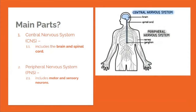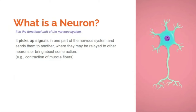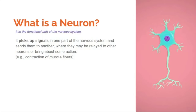The main parts are the central nervous system and the peripheral nervous system. The central nervous system includes the brain and spinal cord. The peripheral nervous system includes motor and sensory neurons. The neuron is the functional unit of the nervous system — it picks up signals in one part and sends them to another, where they may be relayed to other neurons or bring about some action, like contraction of muscle fibers.